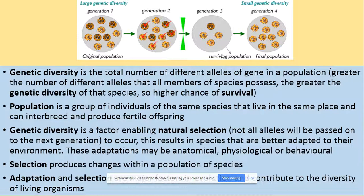Genetic diversity is the total number of different alleles of a gene in a population. The greater the number of different alleles that all members of a species possess, the greater the genetic diversity of that species, and the higher the chance of survival. Key terms for this topic include: genetic diversity, survival, alleles, and allele frequency.